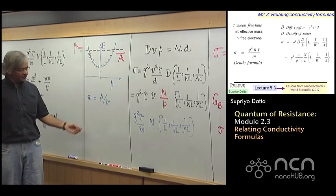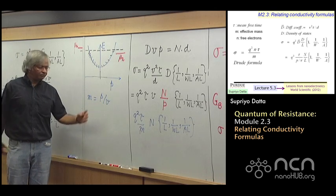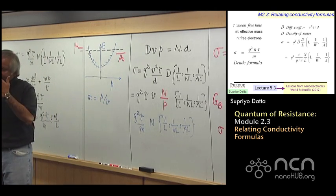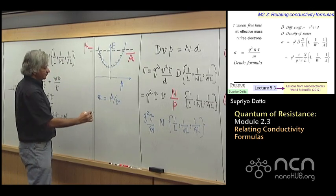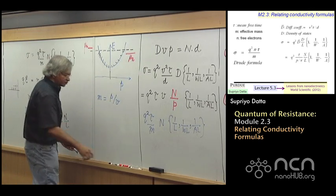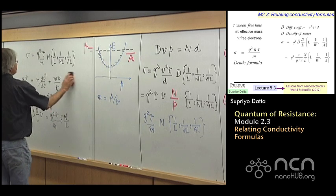Now, which of course looks, you might say, well, p equals mv, we know that. We know momentum is mass times velocity. Yes, but that again is, when you have a parabolic relation like e equals p square over 2m.